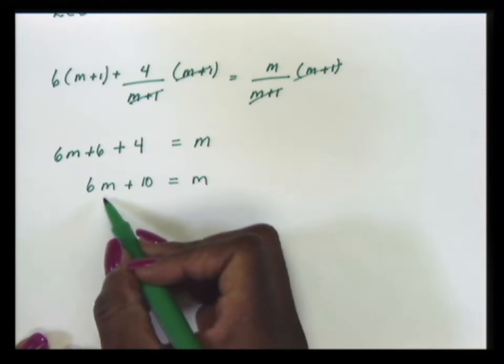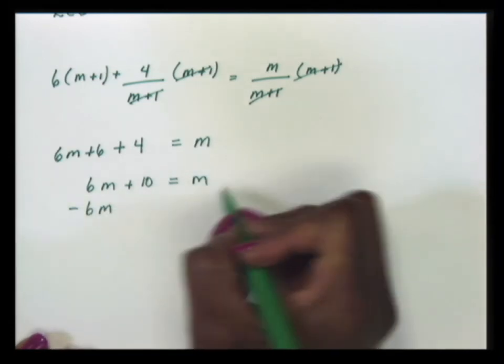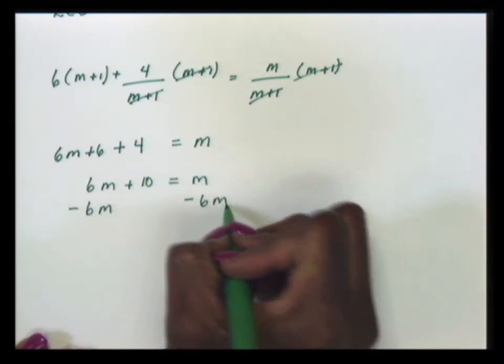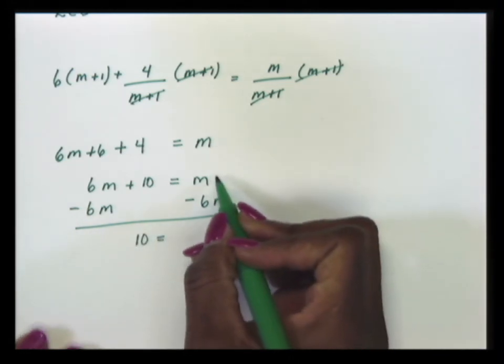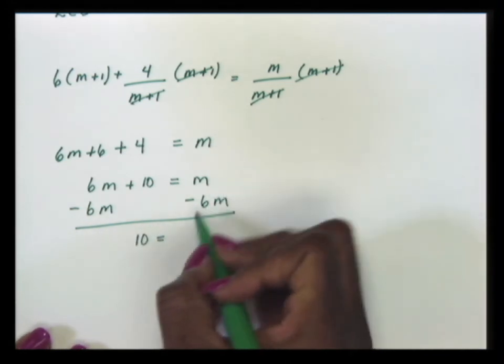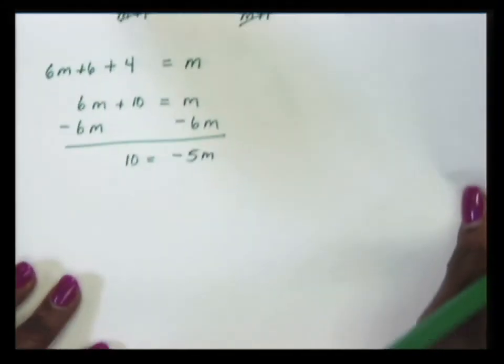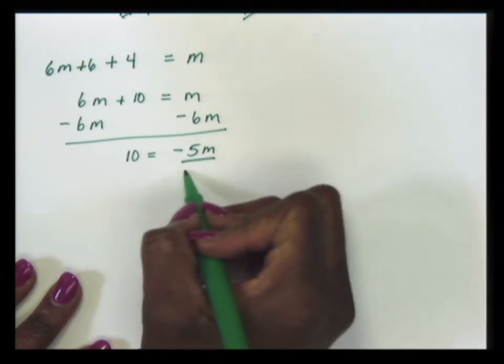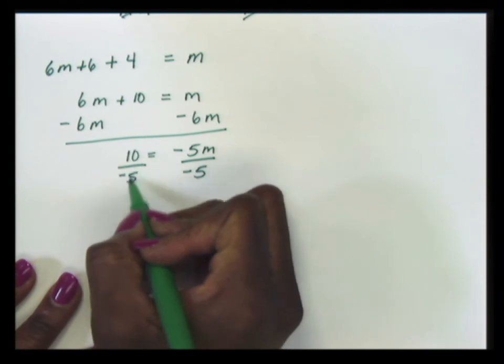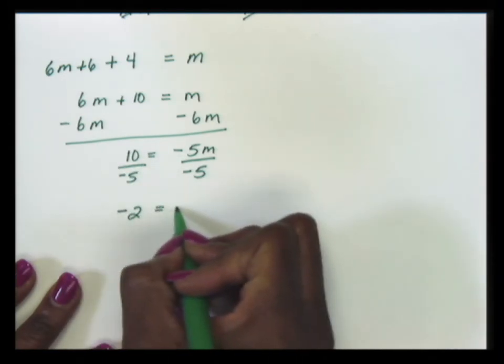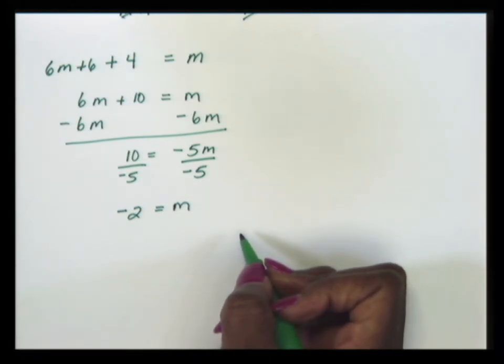To move our variables all to one side, I will subtract 6m from both sides. So now I have 10 equals m minus 6m, which gives us negative 5m. Lastly, we will divide by negative 5. 10 divided by negative 5 is negative 2. So the value of m is equal to negative 2.